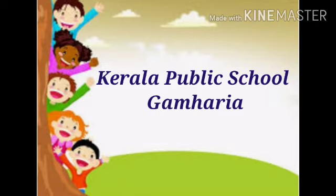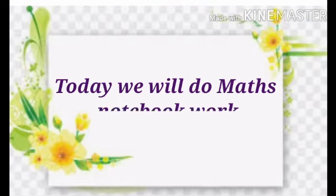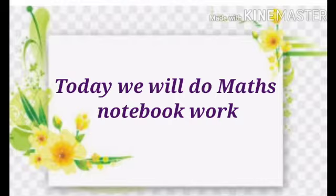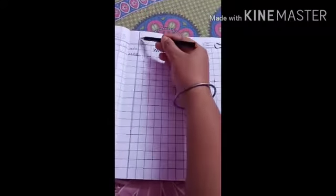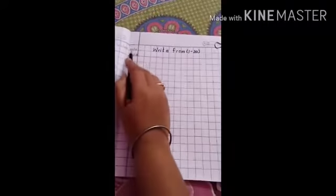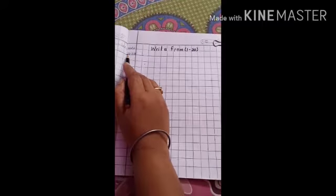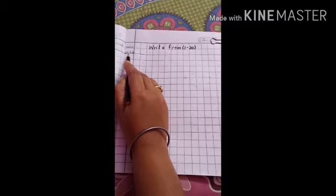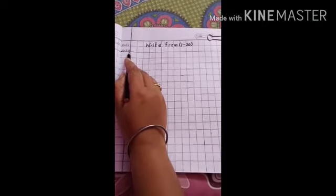So children, today we are going to do maths notebook work. Let's start. Take out your maths copy, draw a double line, then draw a margin line. Then write date 22.8.20.